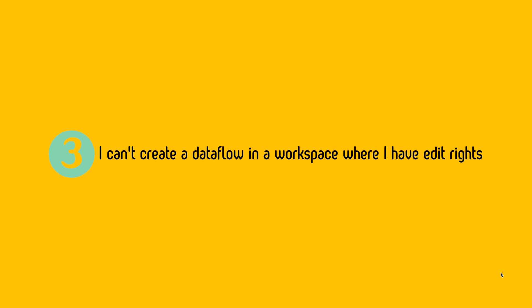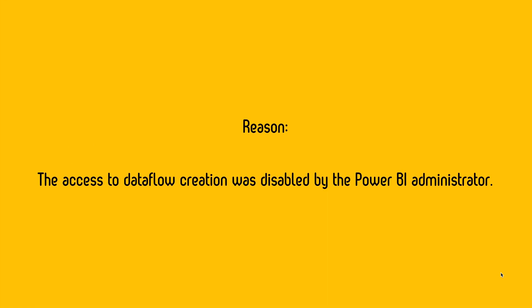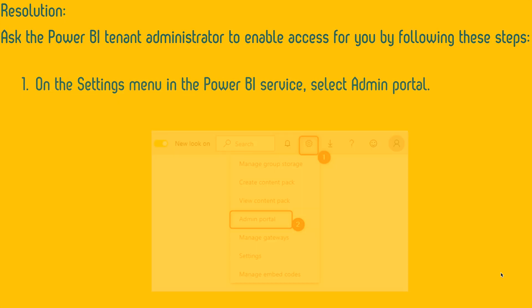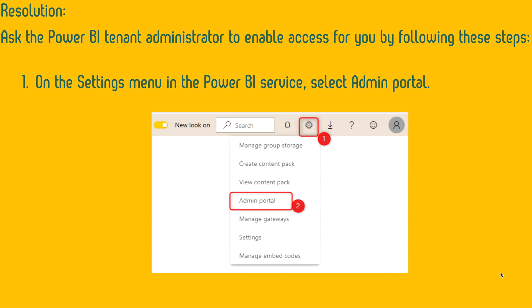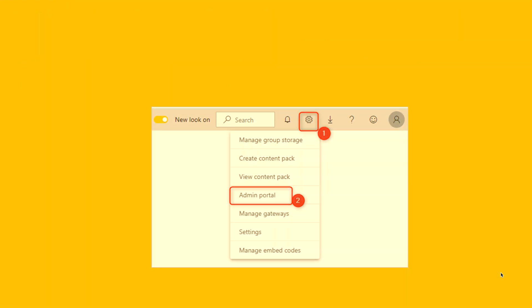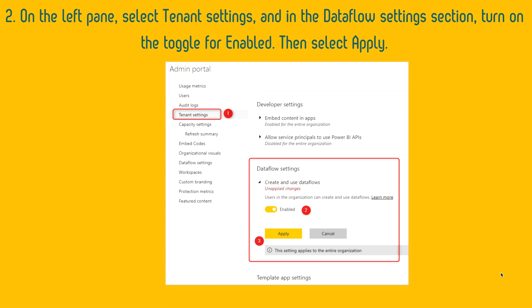Next: you can't create a data flow in a workspace where you do have edit rights. The reason is that access to data flow creation was disabled by the Power BI admin. To enable it, go to your Power BI admin portal — accessible from the gear icon at the top of the Power BI service — then go to the Admin Portal, navigate to Tenant Settings, and under Data Flow settings enable that setting. If you don't have this right, contact the Power BI admin.